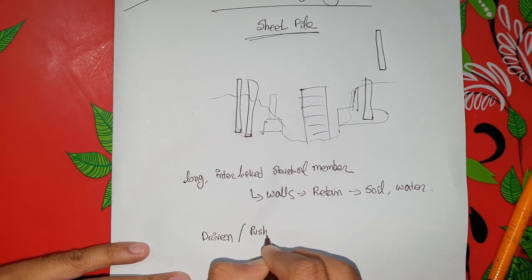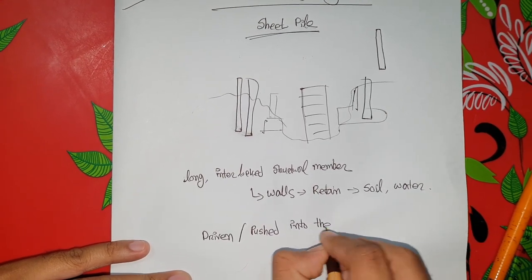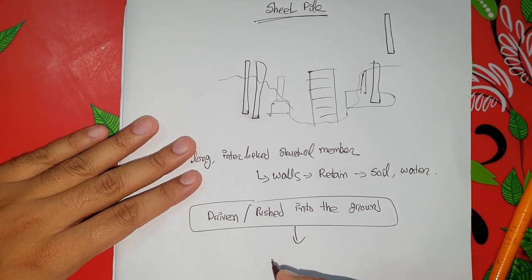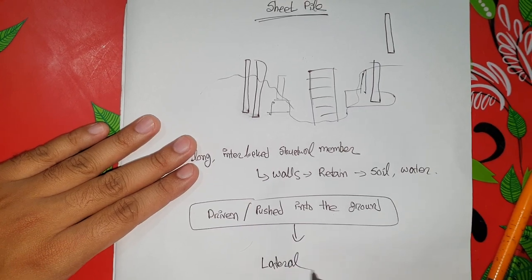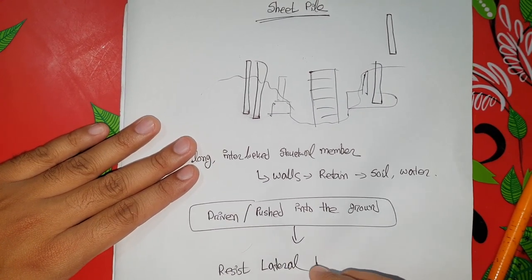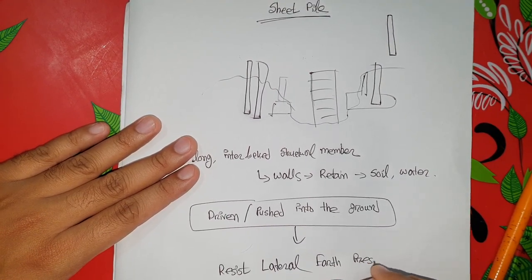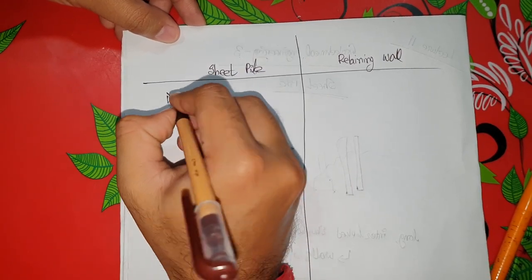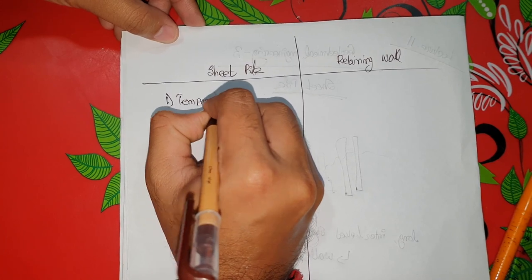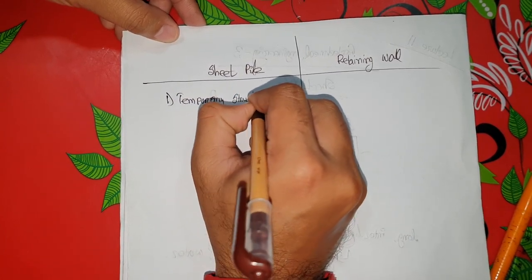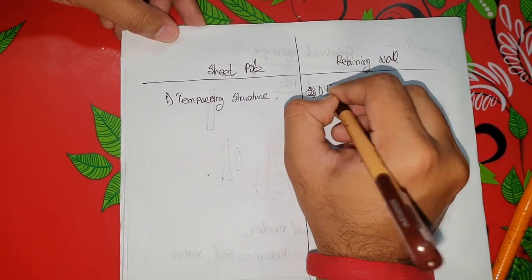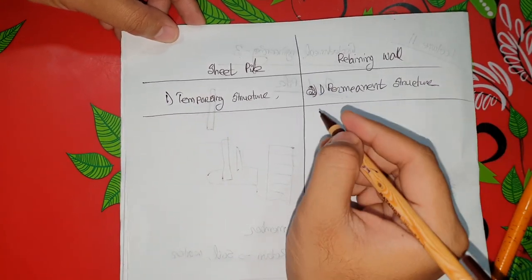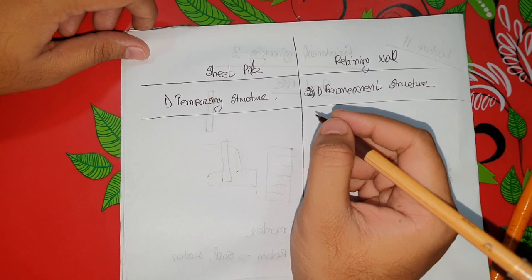The sheet pile is driven or pushed into the ground, forming a barrier that resists lateral earth pressure. The sheet pile is a retaining wall. The difference is that the sheet pile is a temporary structure, while the retaining wall is a permanent structure.